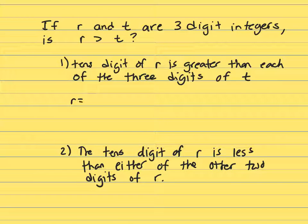So, let's say R is dash, dash, dash, that's ones, tens, hundreds, and T has also got three digits. The tens digit of R, so we're talking about this position here, is greater than each of the three digits of T.